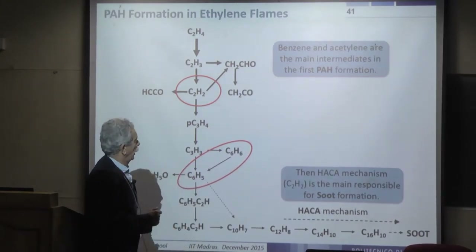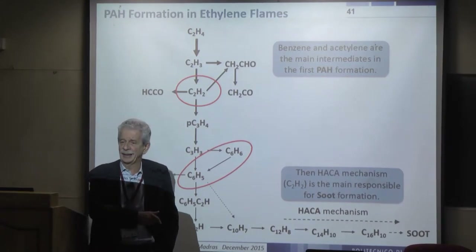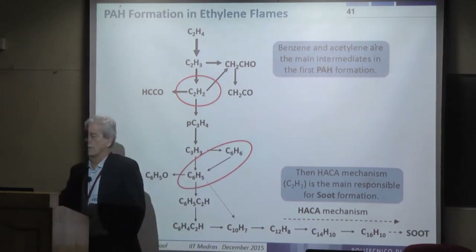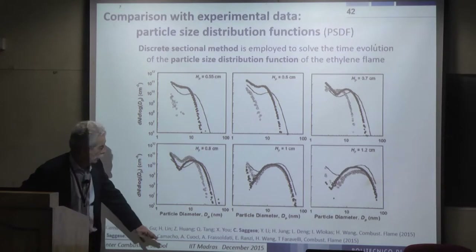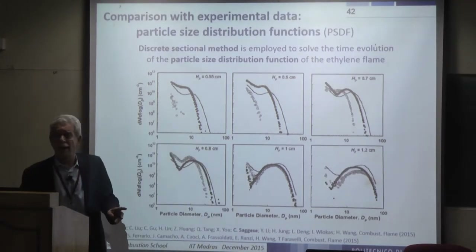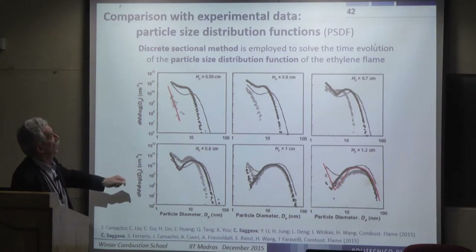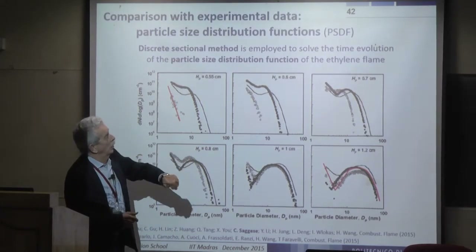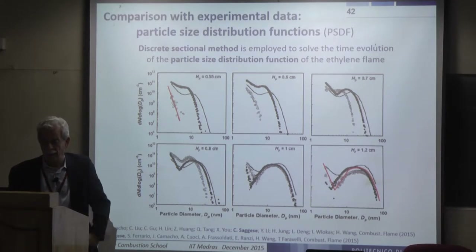The HACA mechanism was proposed about 20–25 years ago and has been extensively studied. Recently our team in Milan collaborated with Stanford and Hai Wang on modeling soot formation to represent different behaviors. The diameter distribution near the burner shows no bimodal character, but farther from the burner a bimodal distribution appears, as reported in the results.